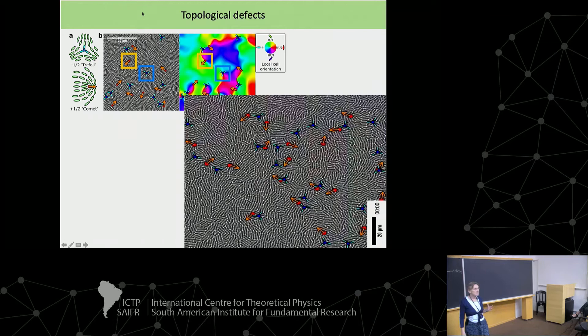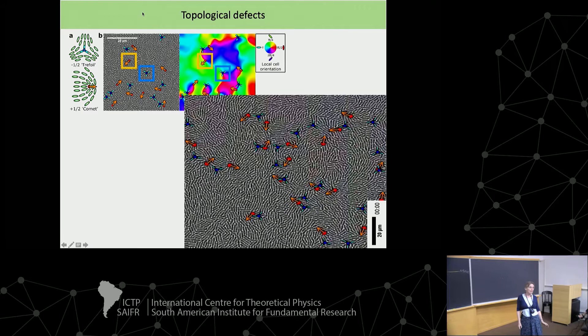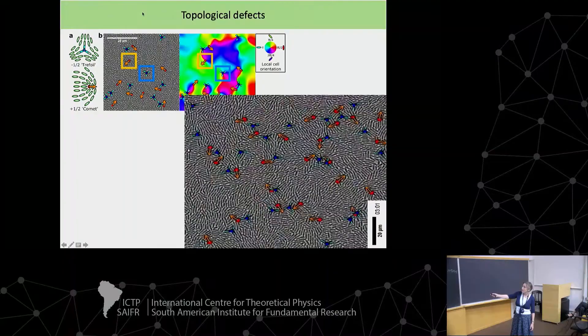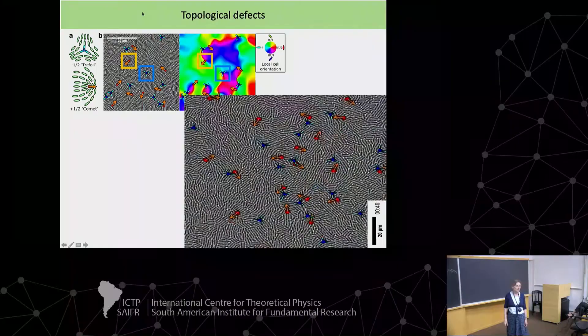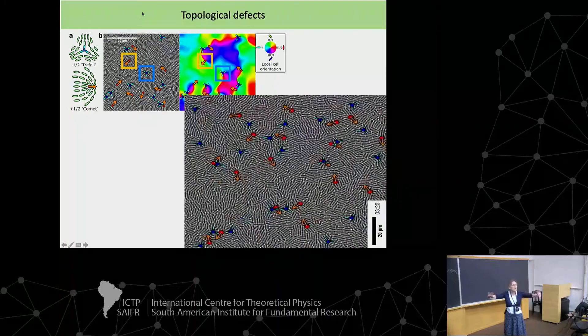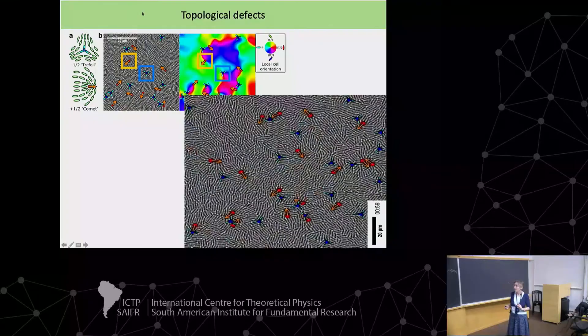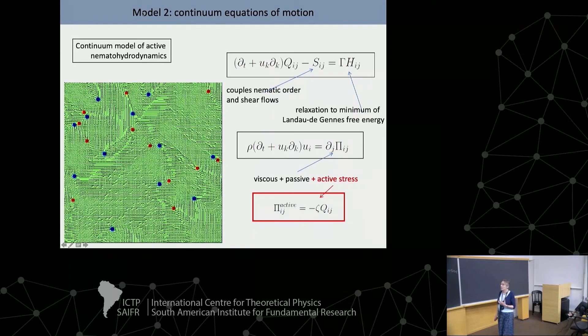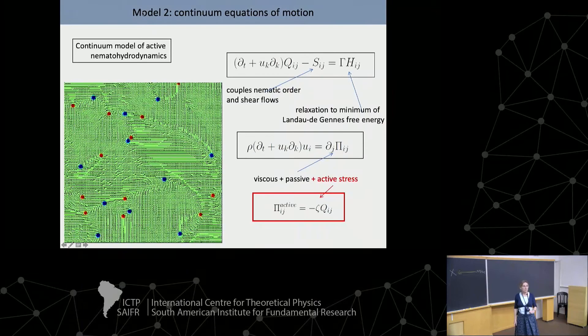Let's think about topological defects in these systems. If we have something that looks locally nematic, we can look for patterns that are either a plus-one-half or minus-one-half defect. The red ones are the plus-one-halves with arrows showing direction of motion; the blue ones are the minus-one-halves. They're not quite real topological defects — strictly you need a complete nematic everywhere — and this is cheating a bit because it's only locally nematic, but you can still define them and look for these patterns.